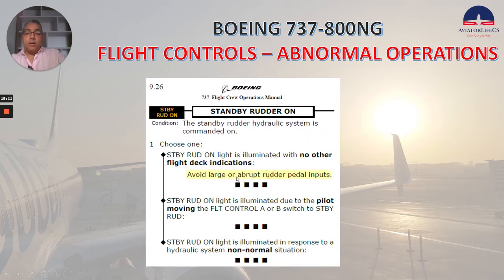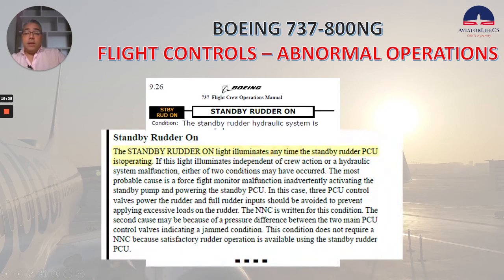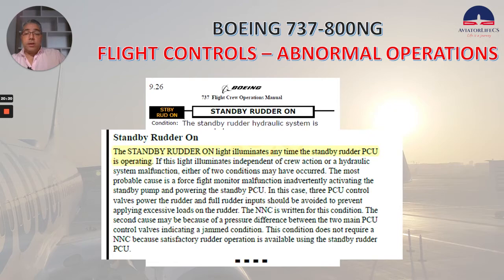Standby rudder on: choose one. For the first option — standby rudder on light is illuminated with no other flight deck indications — avoid large or abrupt rudder pedal inputs. The FCTM says the standby rudder on light illuminates anytime the standby rudder PCU is operating. If this light illuminates independent of crew action or hydraulic system function, either of two conditions may have occurred — feel free to read through those conditions; it's good to know.